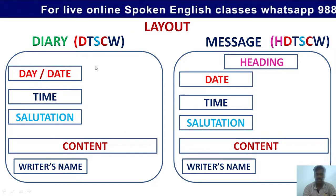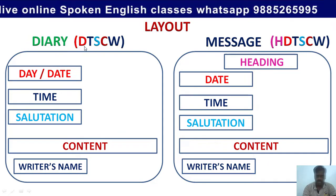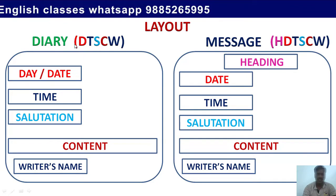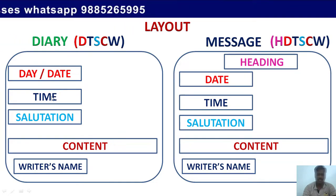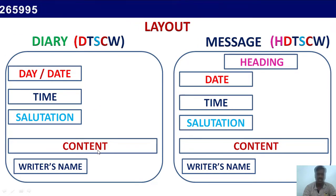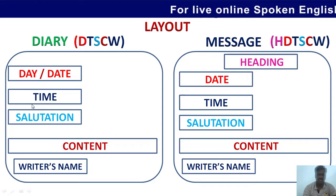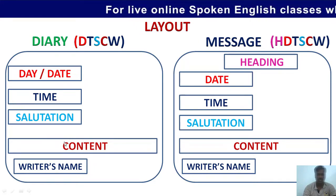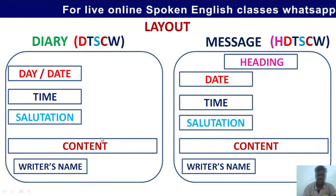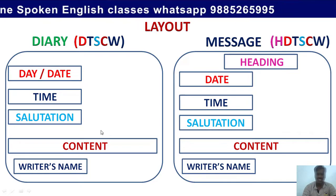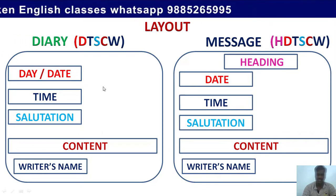Here you can see the diary layout code is DTSCW: D for Day, T for Time, S for Salutation, C for Content, W for Writer's name. You have to include all these parts in the diary. The positions are near the margin, and the content is the heart of the diary — you have to mention all the important points according to the question.